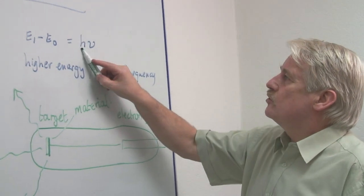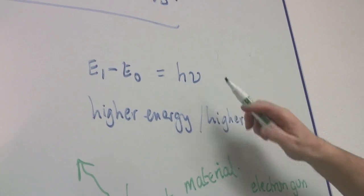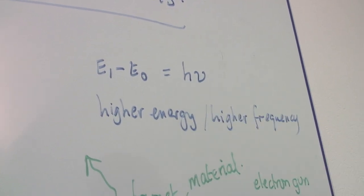And you use this formula, h nu. This is nu, a Greek letter. H nu is the frequency.